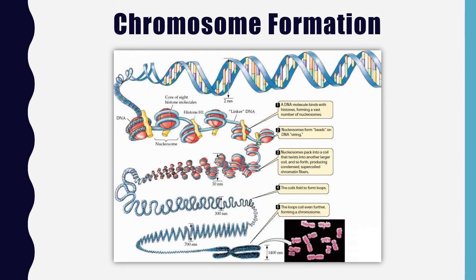How does DNA get from the double-stranded helix to that super-coiled chromosome shape? First, the DNA begins to coil up and wraps around proteins called histones, and those further coil around themselves. DNA wrapped around histones is referred to as a beads-on-a-string formation, and this structure is called a nucleosome. As nucleosomes form, they coil and twist up even more, producing chromatin fibers, which then form tight loops and coil further until they form the chromosome structure.